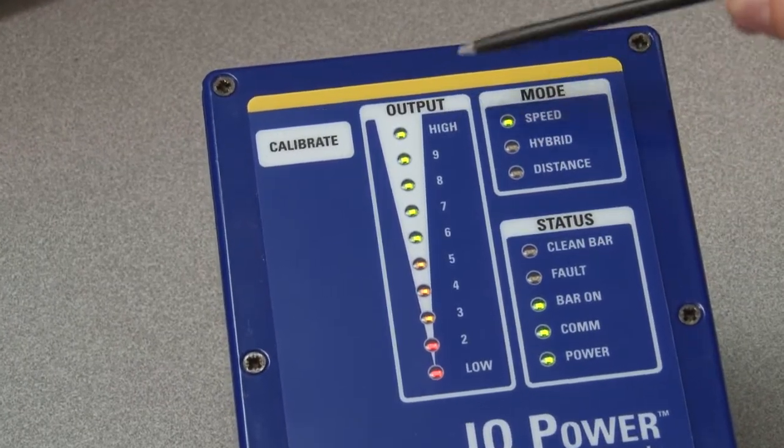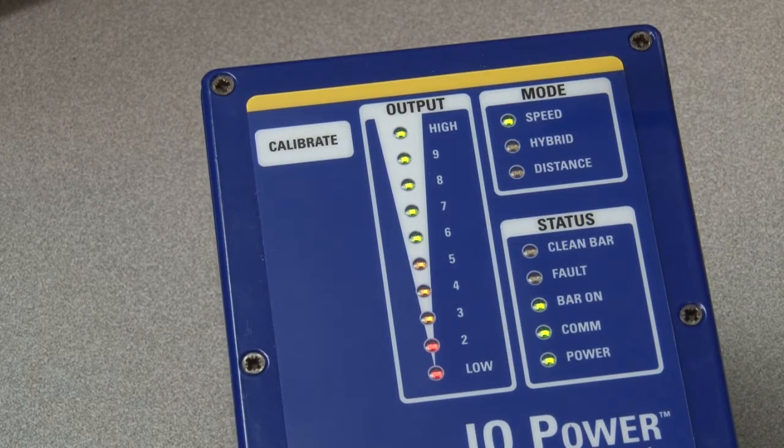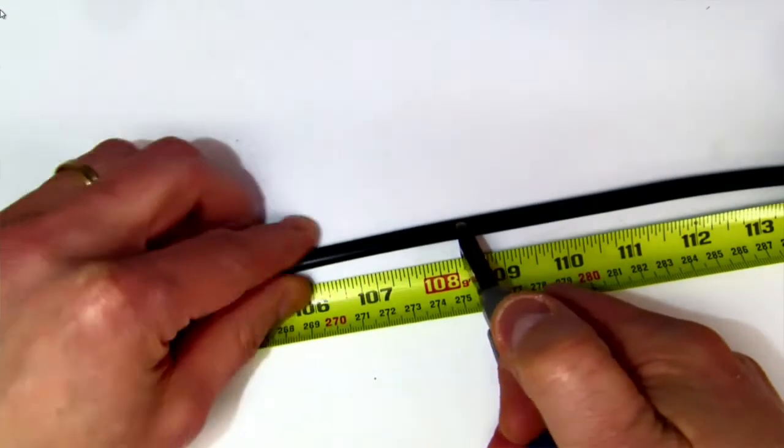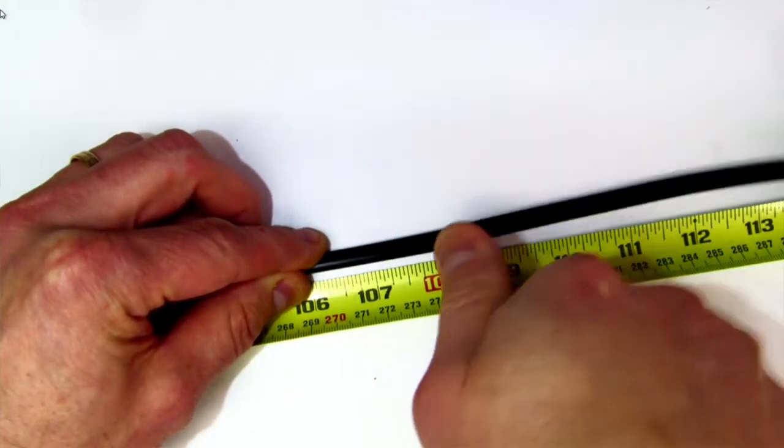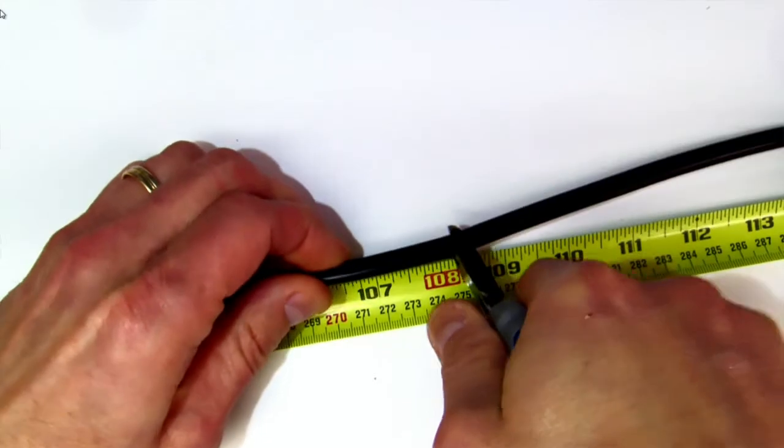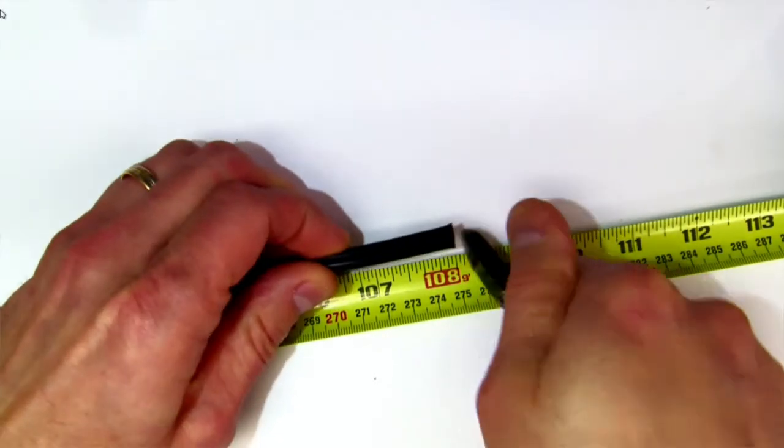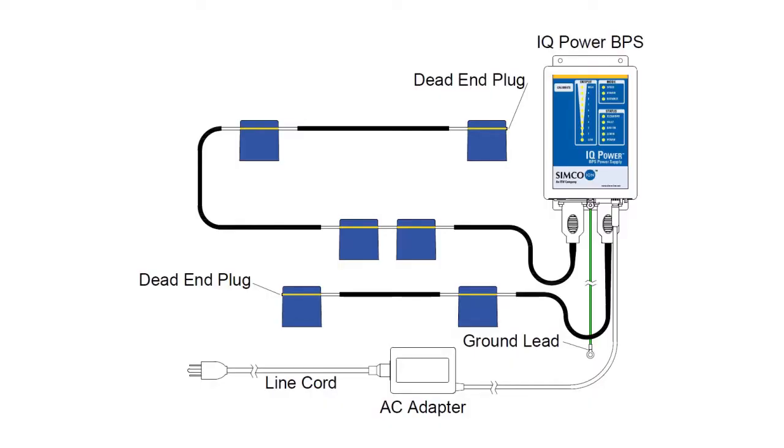The high voltage cable is sold separately and is offered in 10, 20, and 30-foot lengths. The cables can be cut to your exact requirements and the IQ Power Nozzles can be positioned anywhere on the cable for a truly flexible installation.